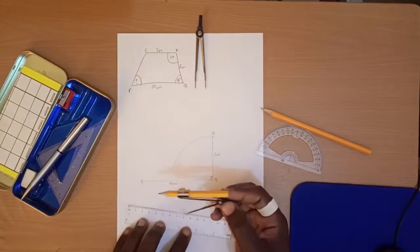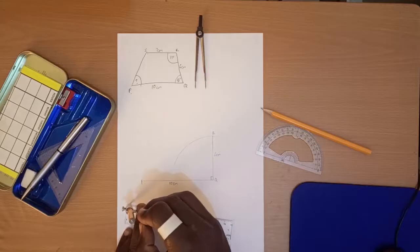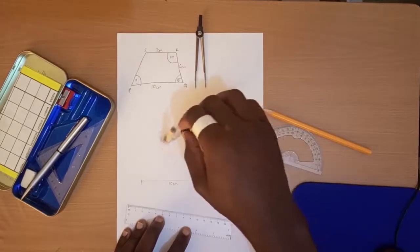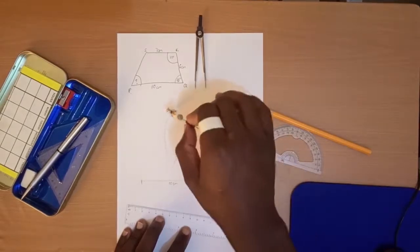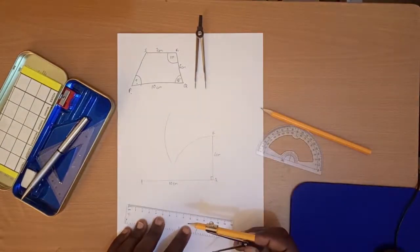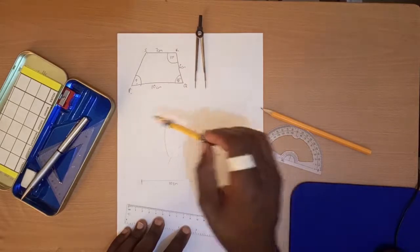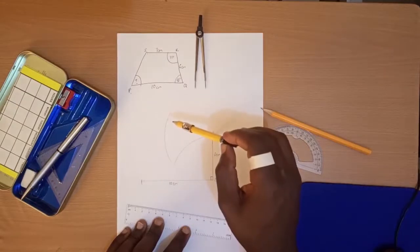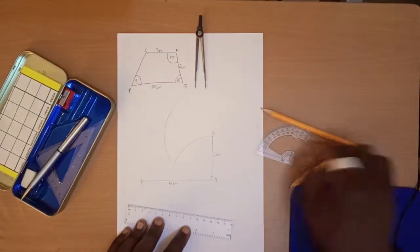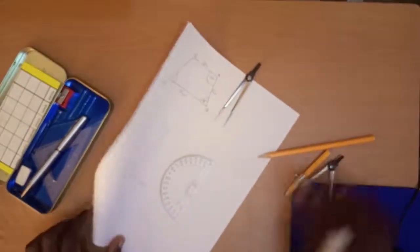Then we are told that R to S is 7, so let's measure 7 centimeters. Stand where R is and do that. That's 7 centimeters. However, we've been asked to measure the angle QRS as 120 degrees. So let's measure the 120 degrees using a protractor. We're going to bend our paper in that way.